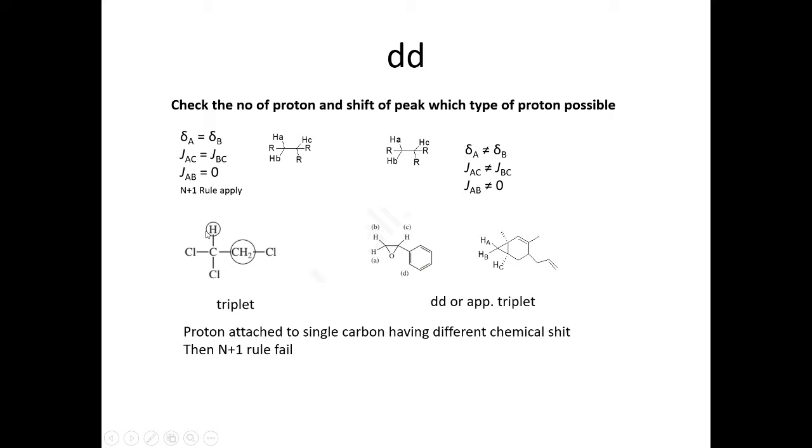But what happens when HB and HA do not have equal chemical shift? When they're coupled to the C proton, it's not a triplet. The n+1 rule fails. These two protons have different chemical shifts and couple to HC proton, giving you a doublet of doublet or apparent triplet.